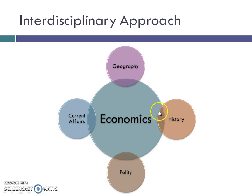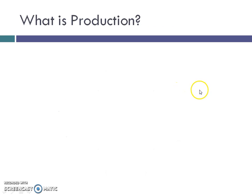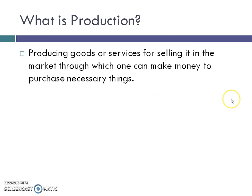I will provide you examples in this lecture regarding economics basic concepts and current affairs. I have an example for you in this slide itself. Now, as the main topic of our discussion today is production, the basic thing is: what is production and why do we do it? Producing goods or services for selling in the market — through which one can make money to purchase necessary things — this is one of the main reasons why we produce any goods or services.